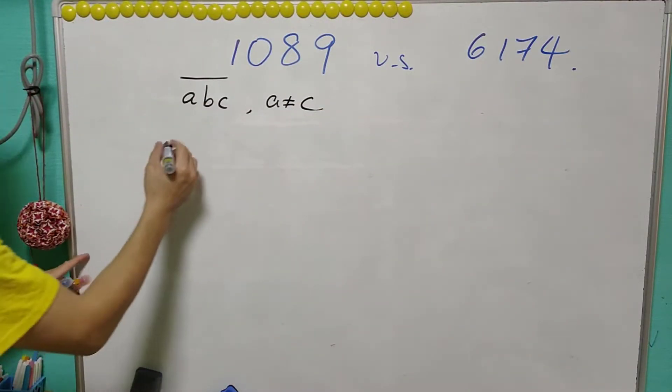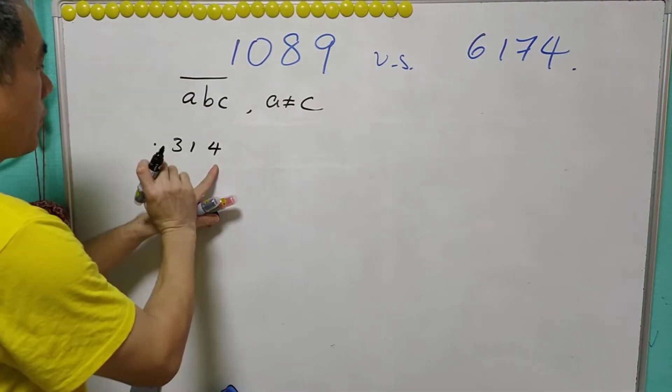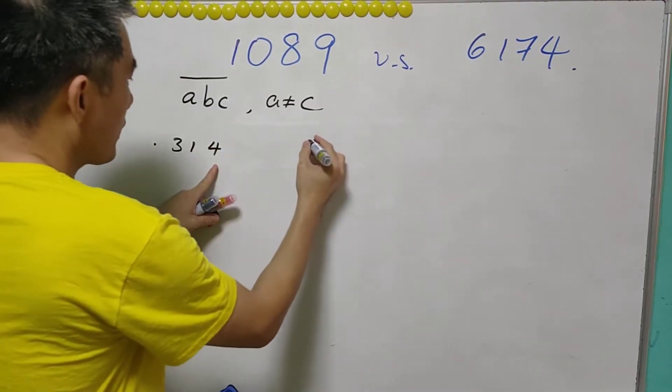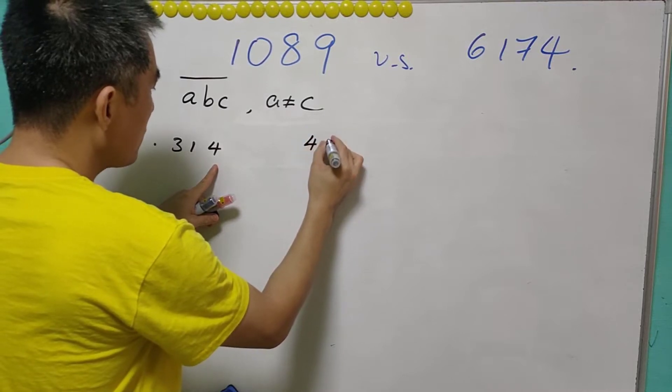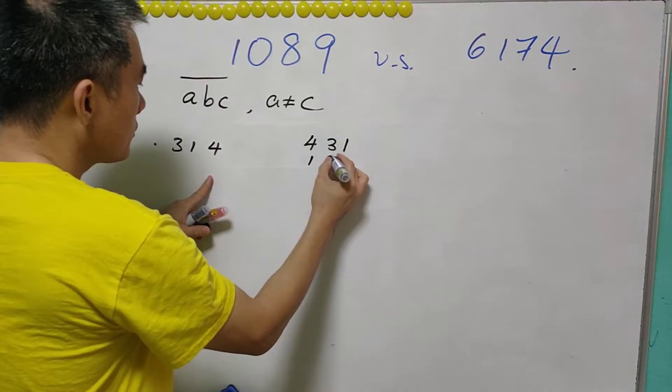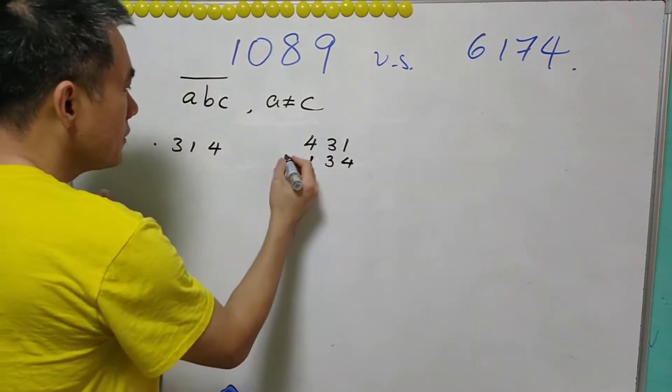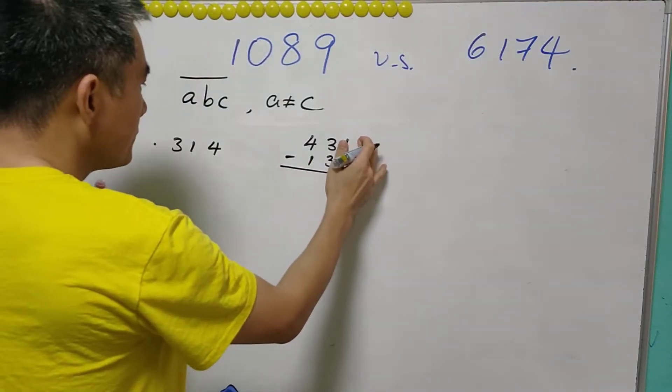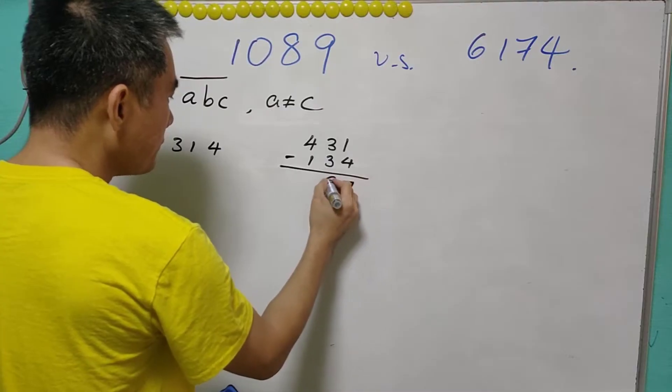Example: 314. We can do a permutation for these three numbers so that we can get the largest number 431 and the smallest number 134. Next we will take the difference, then we obtain 297.